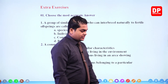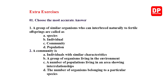Let's see what questions are given here. These are MCQ type questions, so you have to choose the most accurate answer. The first one: a group of similar organisms who can interbreed naturally to produce fertile offspring are called as...